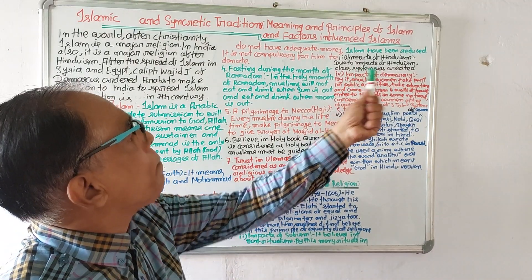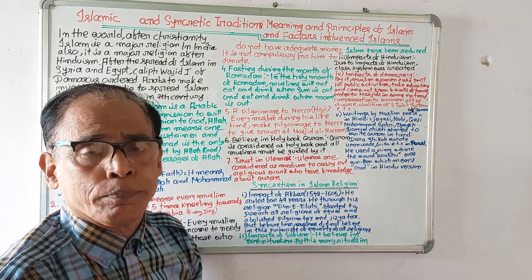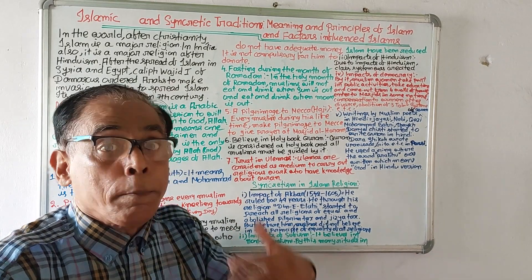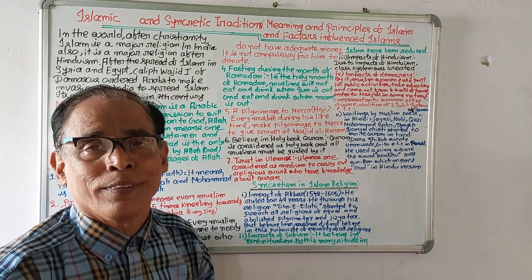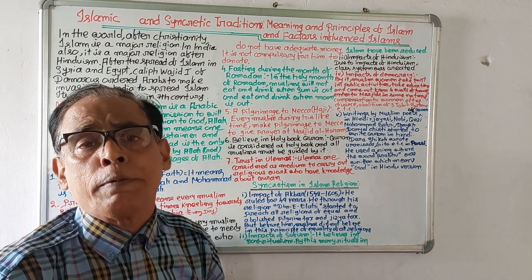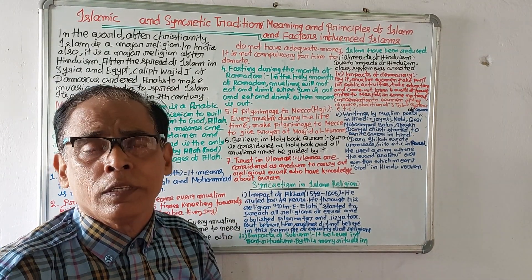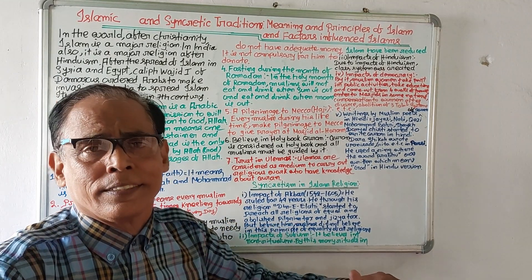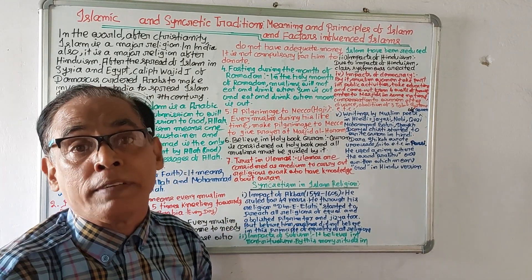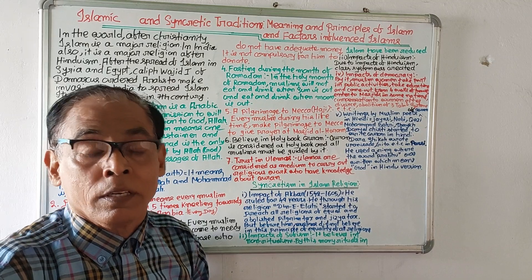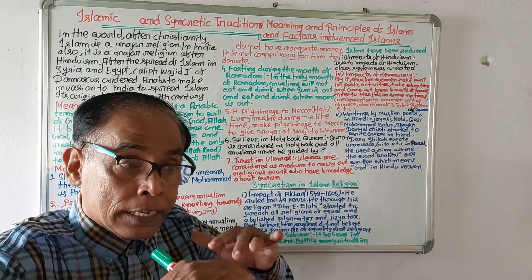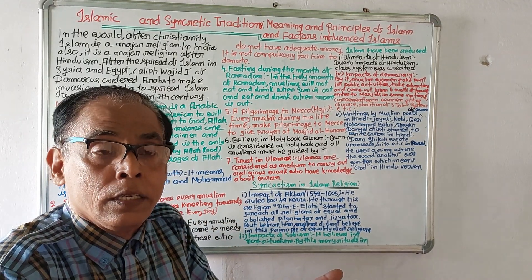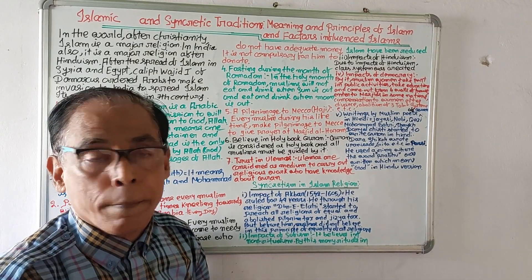Number three is the impact of Hinduism. Before this influence, there were no classes within Islam. By the impact of Hinduism, different classes were created in the Islam religion.